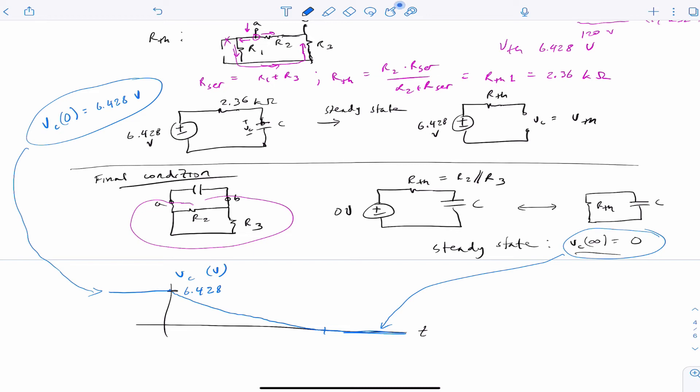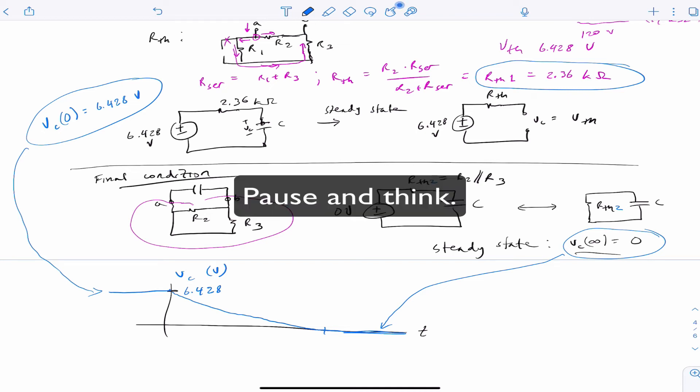We have two R Thevenins here, so there's an R Thevenin 1, and if you like we'll call this R Thevenin 2. So now we need to figure out which R Thevenin is the one that determines this time constant. Take a moment, pause the video, think about it, and unpause when you have an answer.